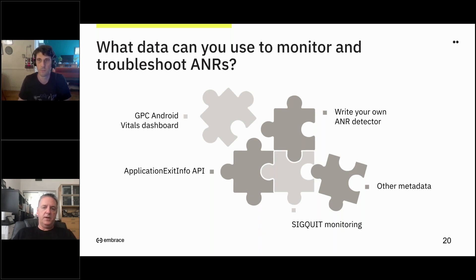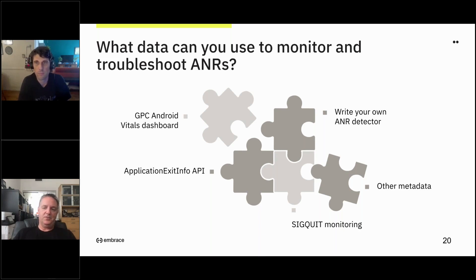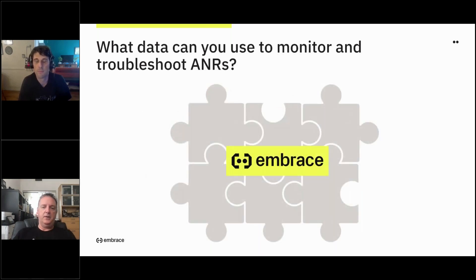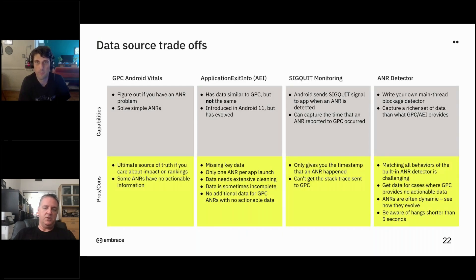There are quite a number of things you can do to get more data about your ANRs. They're not necessarily easy to do. Obviously you have the GPC dashboard. There's the Application Exit Info introduced in Android 11. There's SigQuit monitoring, or you can write your own ANR detector. All of it is out there, but we've put in the effort to bundle it all together to provide as comprehensive a solution as possible so you don't have to invest the time to do that yourself.